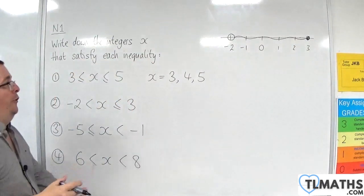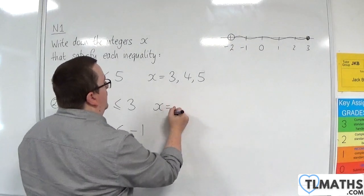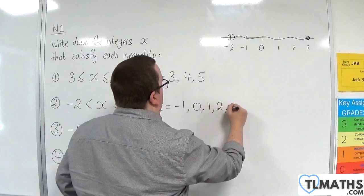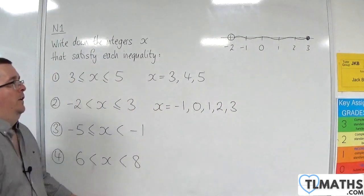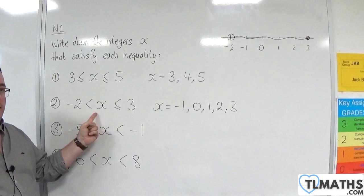So because we're not including minus 2, the x values here are minus 1, 0, 1, 2, or 3. So they are the integers that satisfy that inequality.